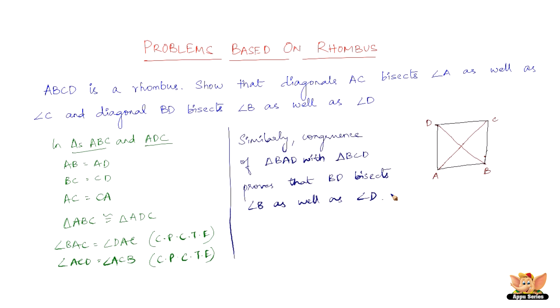But in the examination point of view, you are not supposed to write this, you are supposed to show the actual working, proving that the other two triangles, that is triangle BAD and triangle BCD are in fact congruent to each other and as a result of which, you will be proving that the diagonal BD bisects angle B as well as angle D.